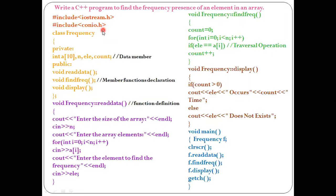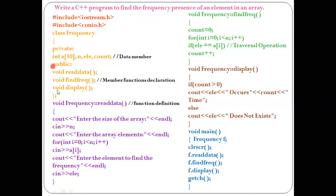Then comes the declaration of a class. The keyword is 'class' and the class name is 'frequency'. Inside the class, under the private access specifier, the data members are declared: int a, n, element, and count. Under the public access specifier, three member functions are declared: void readData, void findFrequency, and void display. These will be defined outside the class. The closing flower bracket and semicolon represent the end of the class declaration.